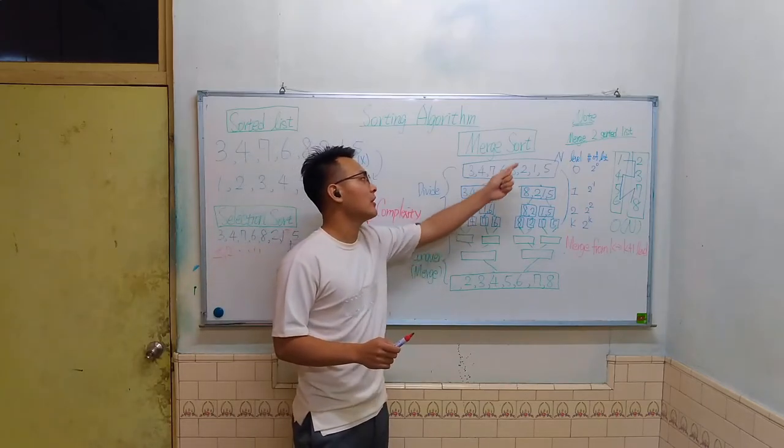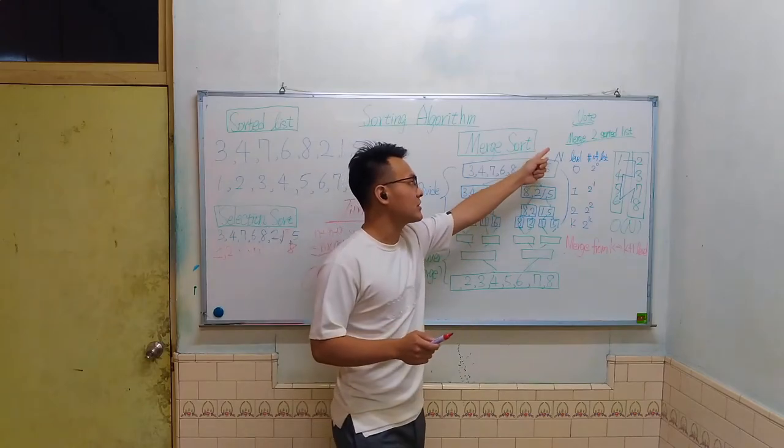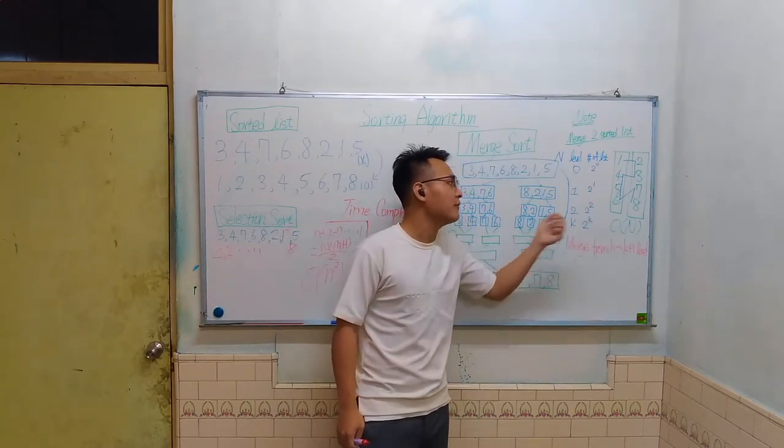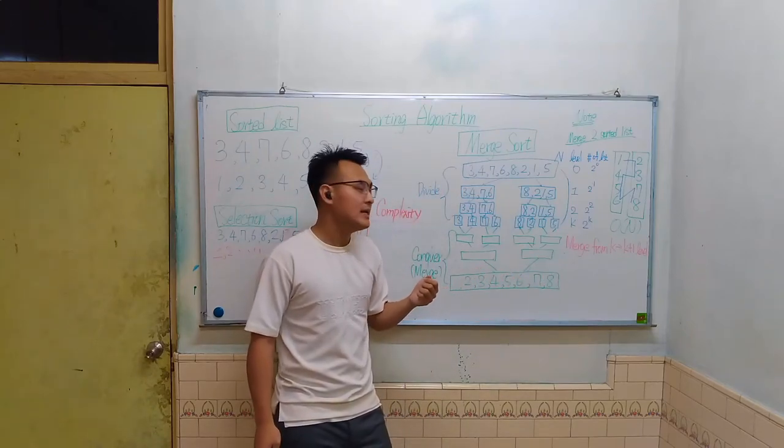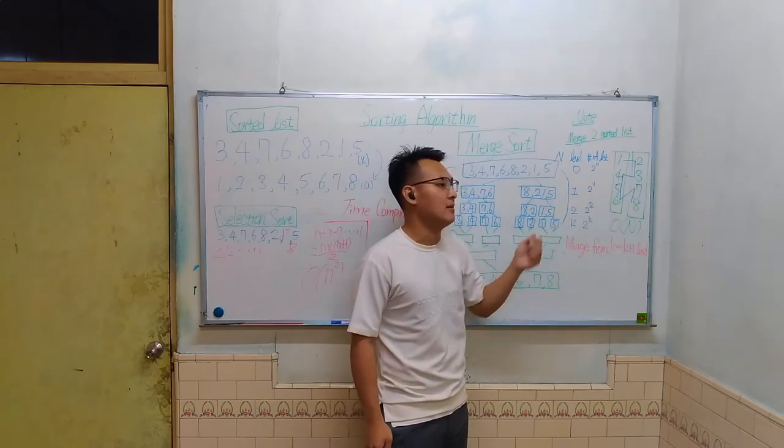So if we want to merge two sorted lists, it only takes linear time to finish it. And it is quite easy to understand because we have to visit all the elements in the list to get the final result.